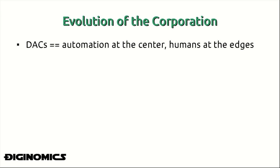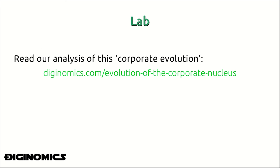More interestingly, the humans at the edges may become replaced by machines once smart contracts — which are currently in development — are implemented. This brings us to the conclusion of this lesson, and if you're interested you can go ahead and read our analysis of this corporate evolution at diginomics.com/evolution-of-the-corporate-nucleus. This is something we'd highly recommend, as it covers the underlying transition that Bitcoin technology promotes: that no longer are humans at the center of the corporate nucleus, but machines are the ones producing the capital of the corporation — and are adequately described as the employees and, soon, the customers when smart contracts are implemented.